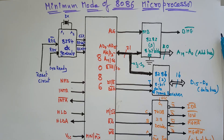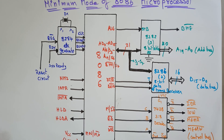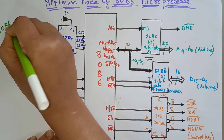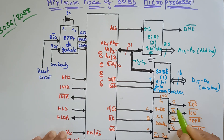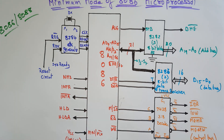Hi students, welcome back. Let's continue with our microprocessor subject. In this video I am going to explain the minimum mode of 8086 microprocessor. Here I have given a minimum mode structure of 8086 microprocessor. Don't get confused — it's a very simple concept. Both 8086 and 8088 can be configured to work either in minimum mode or maximum mode.